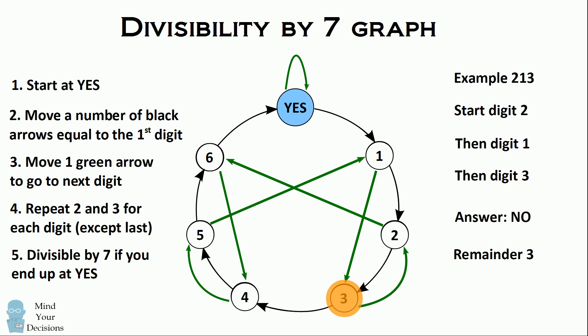This is a really cool graph where you can tell whether a number is divisible by seven and you can actually figure out its remainder just through a series of following black and green arrows.